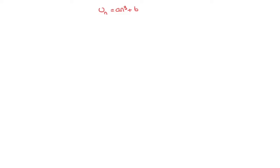We now learn how to find the formula for the nth term of a cubic sequence. Every single cubic sequence has a formula that looks something like this: un equals an cubed plus bn squared plus cn plus d. The scenario we're going to be learning about is we're given the first few terms of a cubic sequence and we need to find its formula.